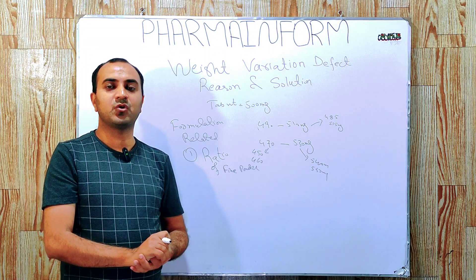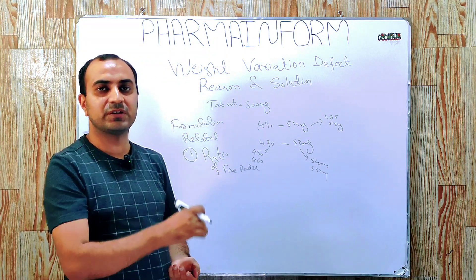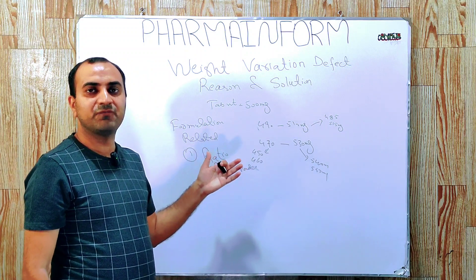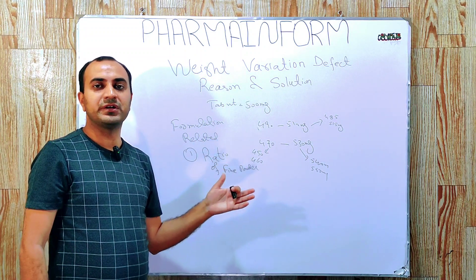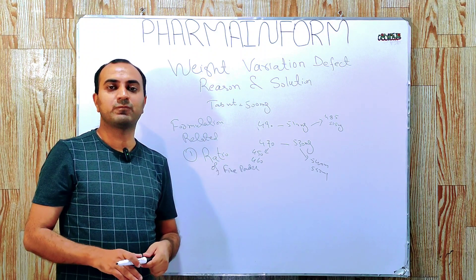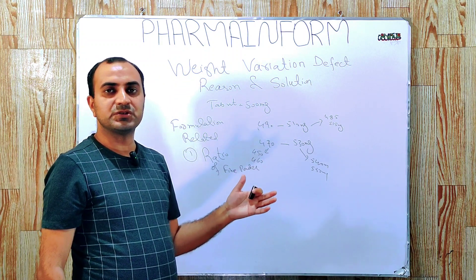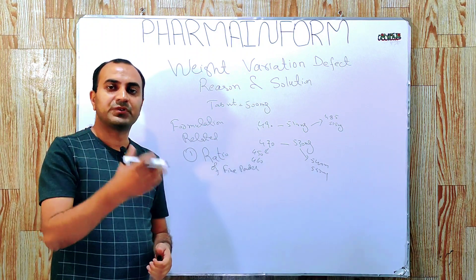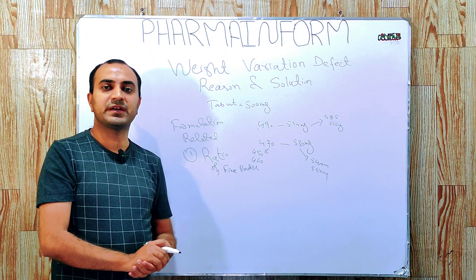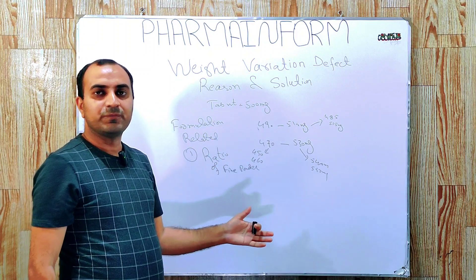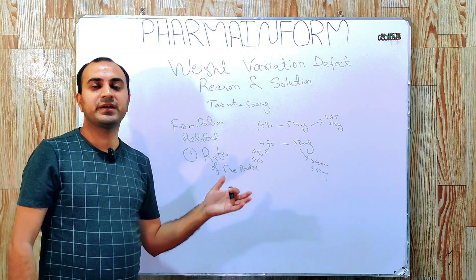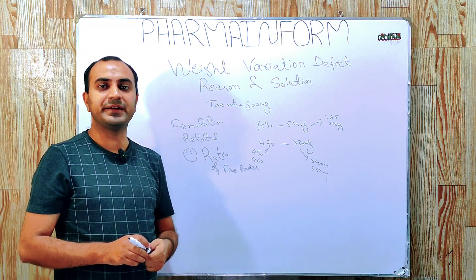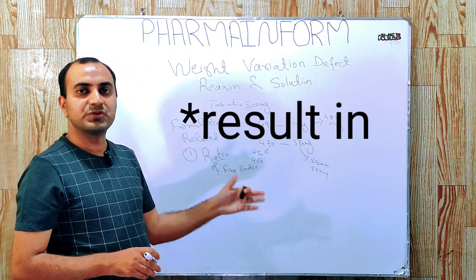If the ratio of fines is very high, there may be many reasons. Taking the example of wet granulation, the reasons for more fine production may be that wetting or kneading is not proper — the end point is not properly achieved. If the end point is not properly achieved, there will be more fines and less granules after drying. The next reason is the percentage of binder. If our formulation contains less binder, the binding capacity will be low and after drying and dry sieving, more fines will be produced. Similarly, if the quantity of solvent added is less, it will also result in more fine production.